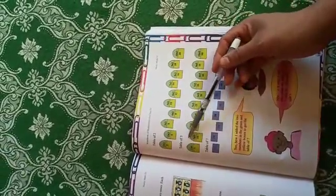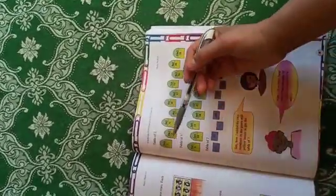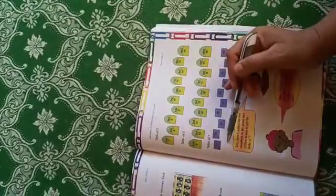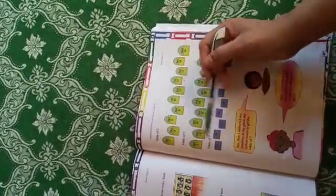Now let's make the table of seven. To make the table of seven, we have the table of two and the table of five, and we have to add them.